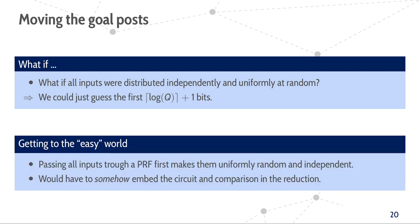This trick is to pass all inputs through a PRF first before comparing them to the guessed prefix. Then, even if they are adversarially chosen, they will be distributed computationally indistinguishable from independent, uniformly random values. However, this evaluation has to happen outside of the view of the adversary and has to be incorporated in the proof of correctness.